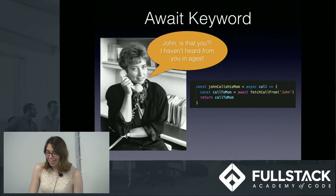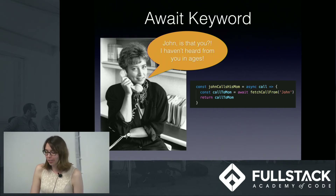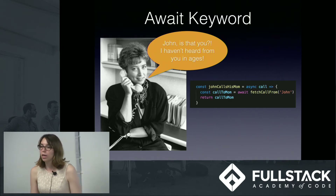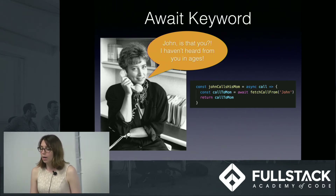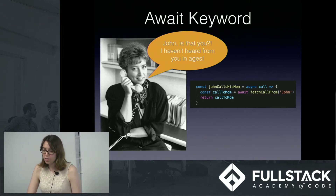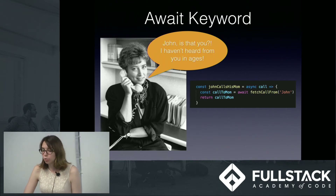An async function can also contain an await expression. This pauses the execution of the function and waits for a promise's resolution, then resumes the async function's execution and returns the resolved value. In this case, we are fetching a call that John made to his mom and returning it. Instead of having to dot-then off of this call to our database, we can use await to assign the result to a variable. This allows our asynchronous code to look and act more synchronous, which makes coding it more intuitive and simple.